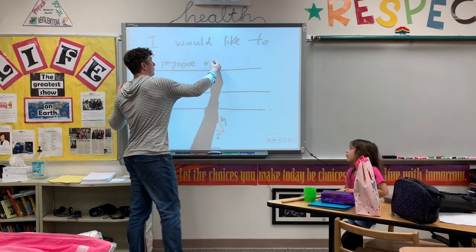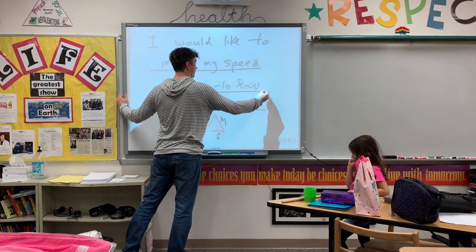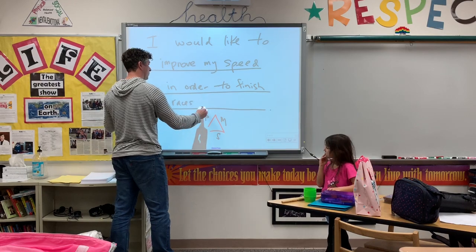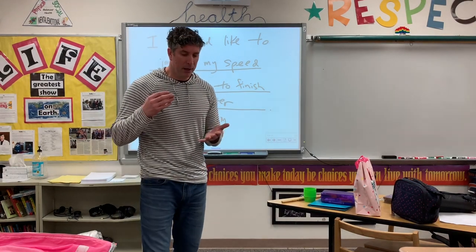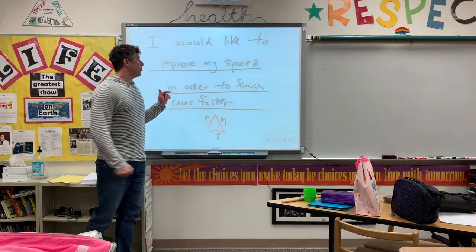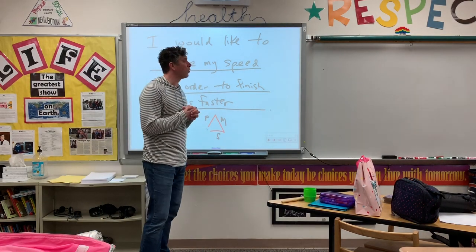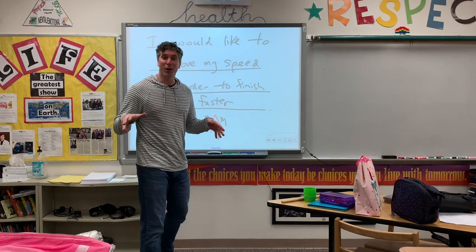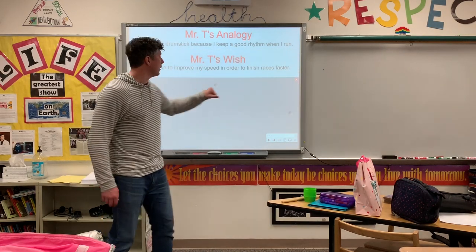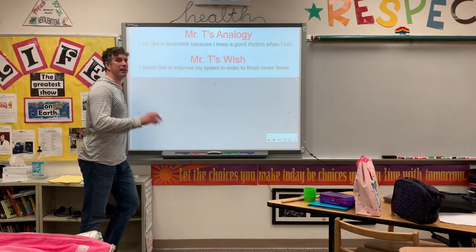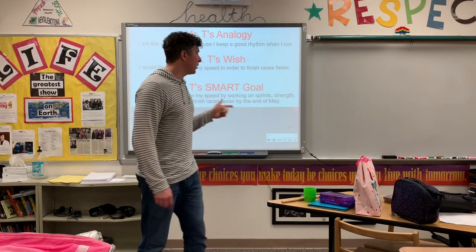For example: 'I would like to improve my speed in order to finish races faster.' This is true for me whether I was teaching health class or not — I would like to improve my speed. I was a runner for a long time; I ran 5Ks, 10Ks, and I even have a marathon story. So I want your wish to be something you would work on even if you didn't have health class. Quick pause as you think about your wish, then we're going to come back for the very last part. Write your second sentence now. So: my first sentence is 'I'm like a drumstick because I keep a good rhythm when I run,' and my wish is 'I would like to improve my speed in order to finish races faster.' But we're not quite done yet — we want to take this wish and turn it into a goal.